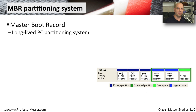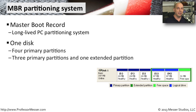A partitioning system that's been around for a very long time is MBR, or Master Boot Record. It's been around since the early days of the PC and is still used on many systems. On a single disk you can have up to four partitions — four primary partitions, or three primary partitions and what we call an extended partition. You're limited to four total partitions on a single individual drive.